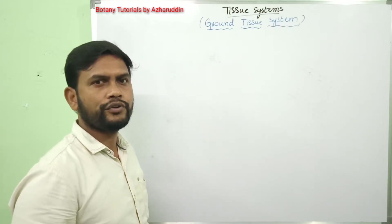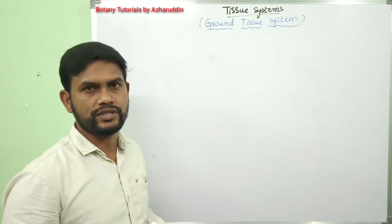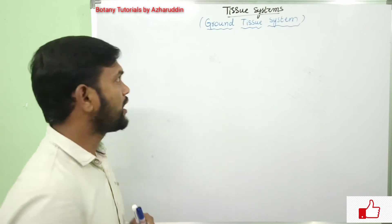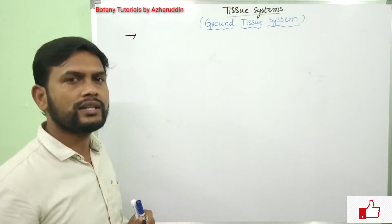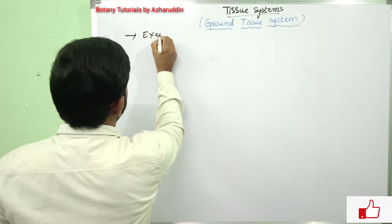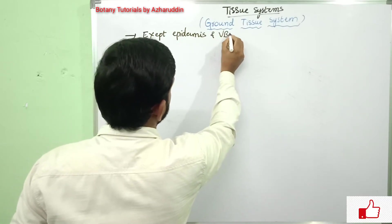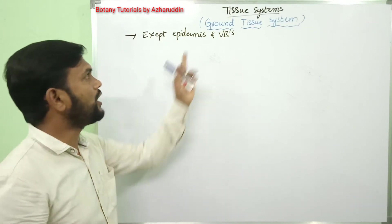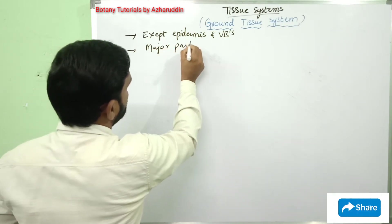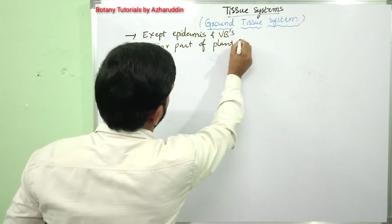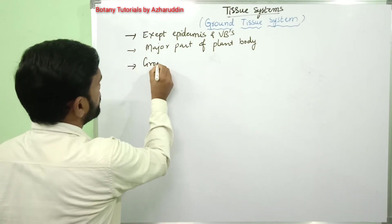Hello everyone, welcome to my channel Body Tutorials. In the previous class we learned about epidermal tissue system. In this session we will discuss about ground tissue system. Except epidermis and vascular tissues, all the remaining tissues together constitute ground tissues. They occupy the major part of the plant body.